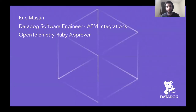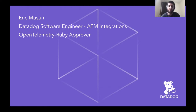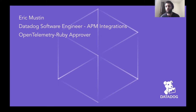A quick introduction — my name is Eric Mustin. I work at Datadog as a software engineer on the APM integrations team, and I'm also active in the OpenTelemetry community. I'm a contributor and approver on OpenTelemetry Ruby, and I've committed to a number of other OpenTelemetry repositories. Whether it's at work helping customers onboard to the vendor I work at, or in the Gitter channel or SIG meetings listening to users talk about how they're getting started with OpenTelemetry, I've had a chance recently to learn a lot about onboarding pain points and what we can do as a community to make that easier for users.